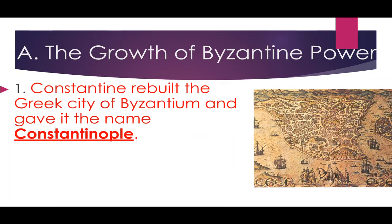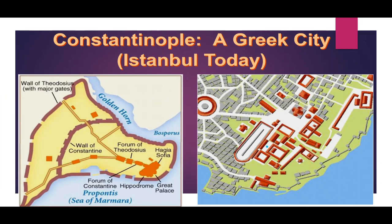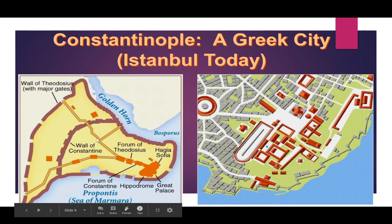Constantine rebuilt the city of Byzantium and named it Constantinople — he was a pretty humble guy who named it after himself. This caused the Eastern Roman Empire to gain power and prestige. Constantinople, today called Istanbul, is really strategically located.